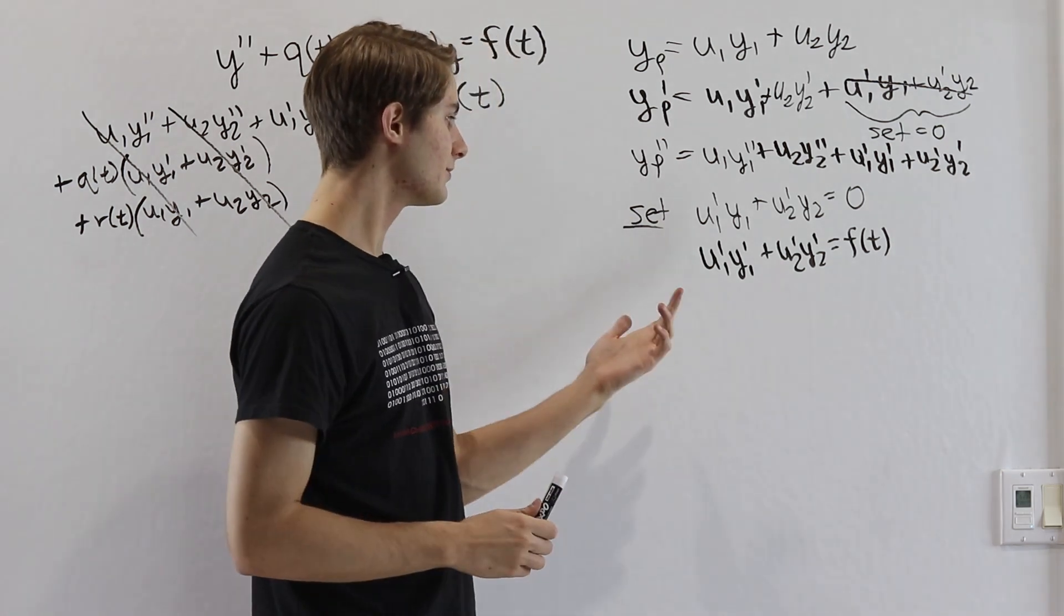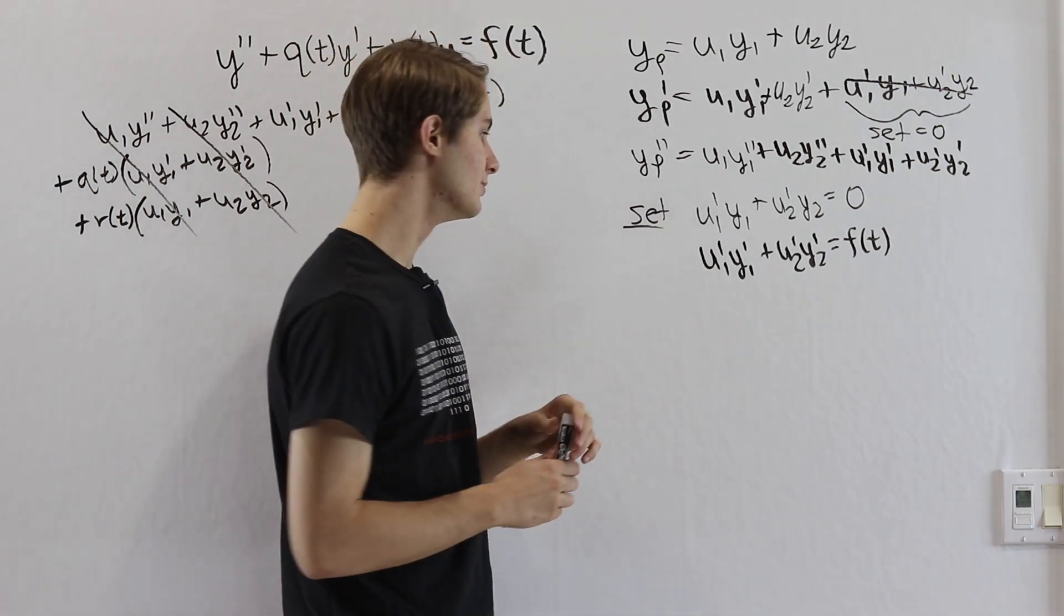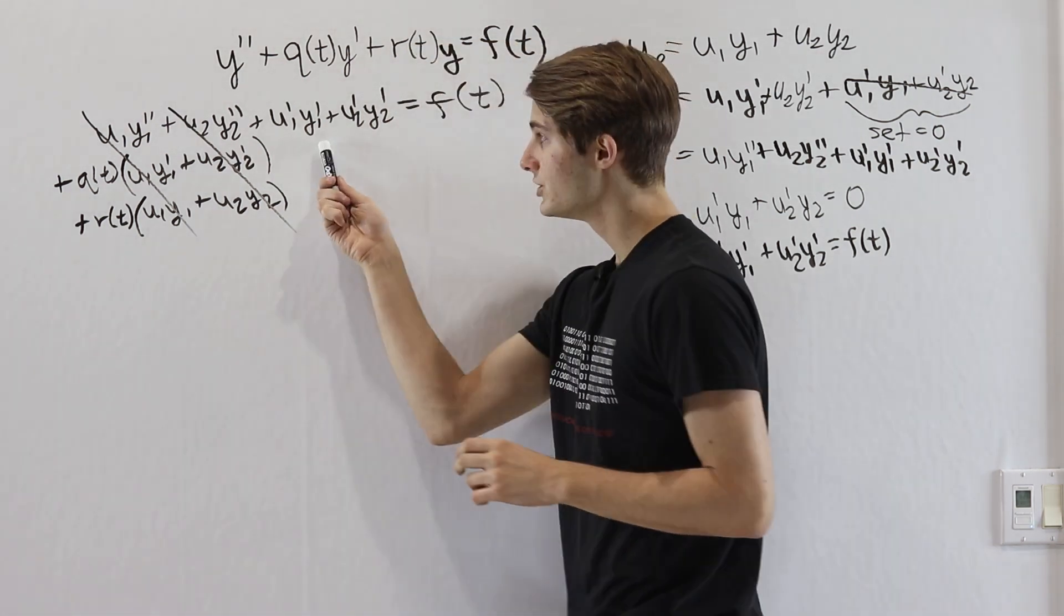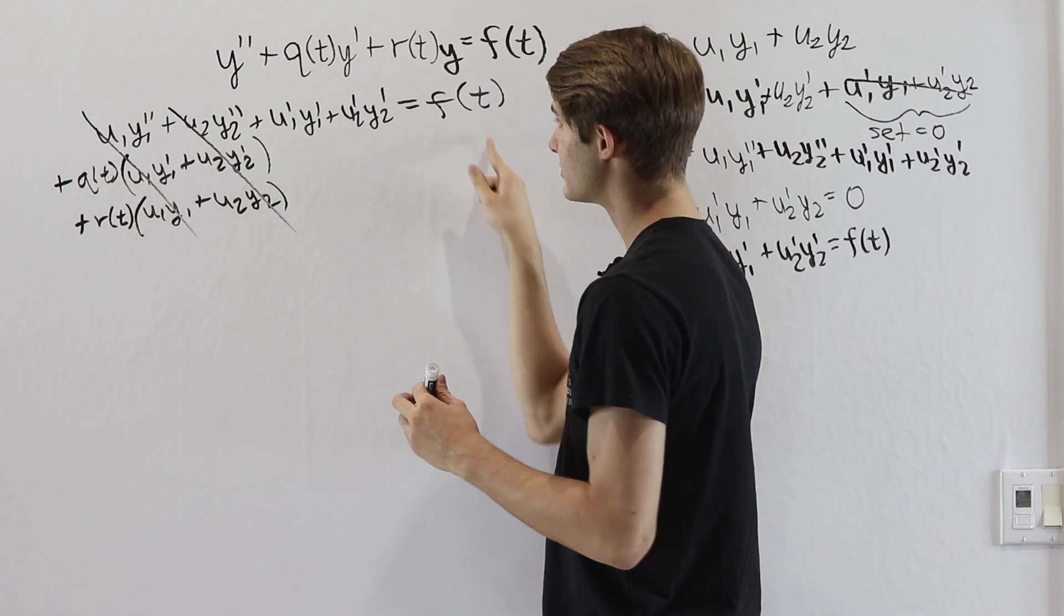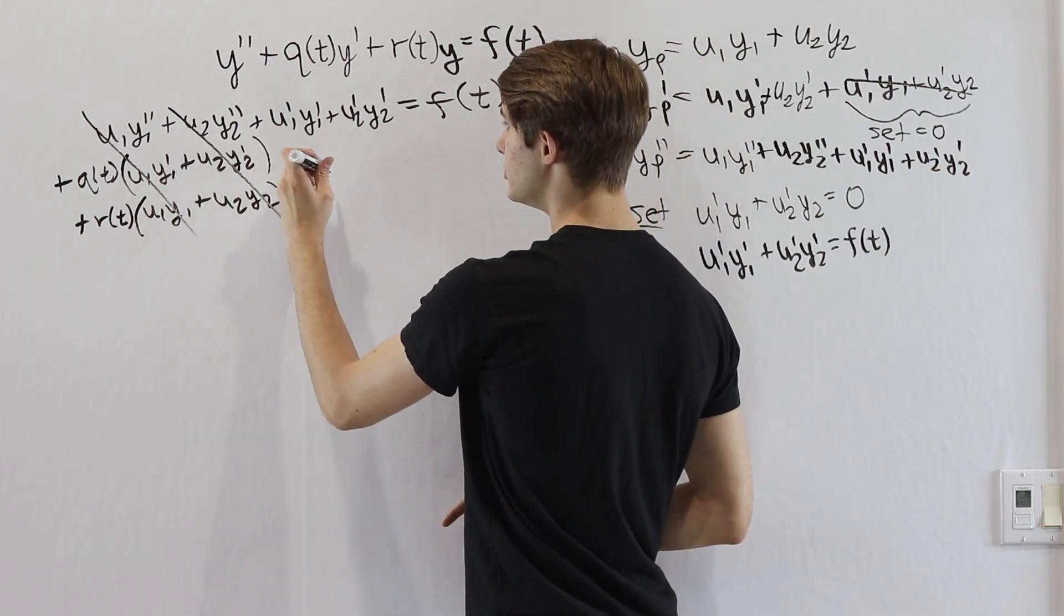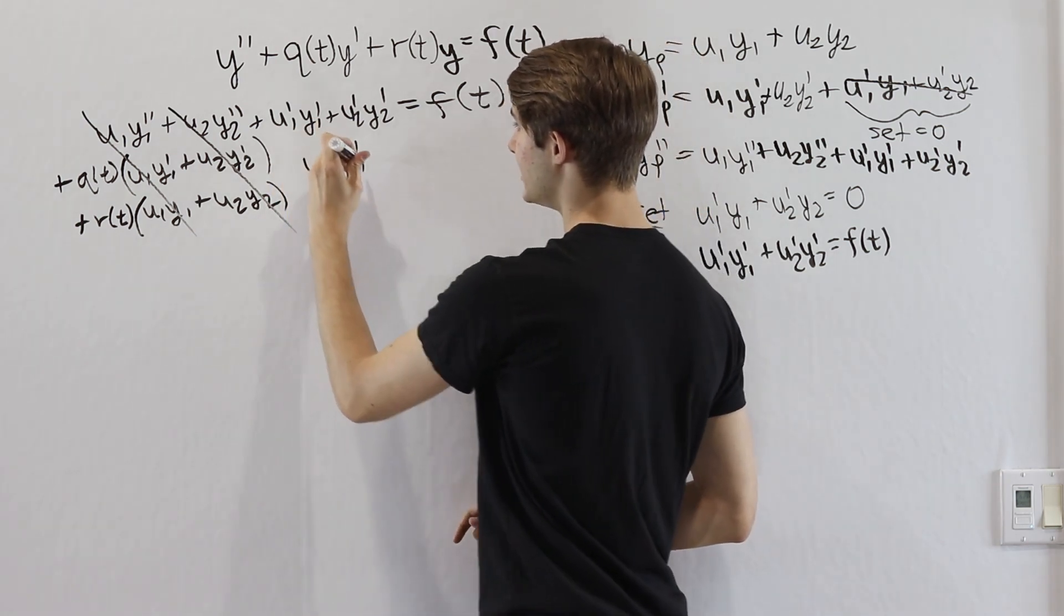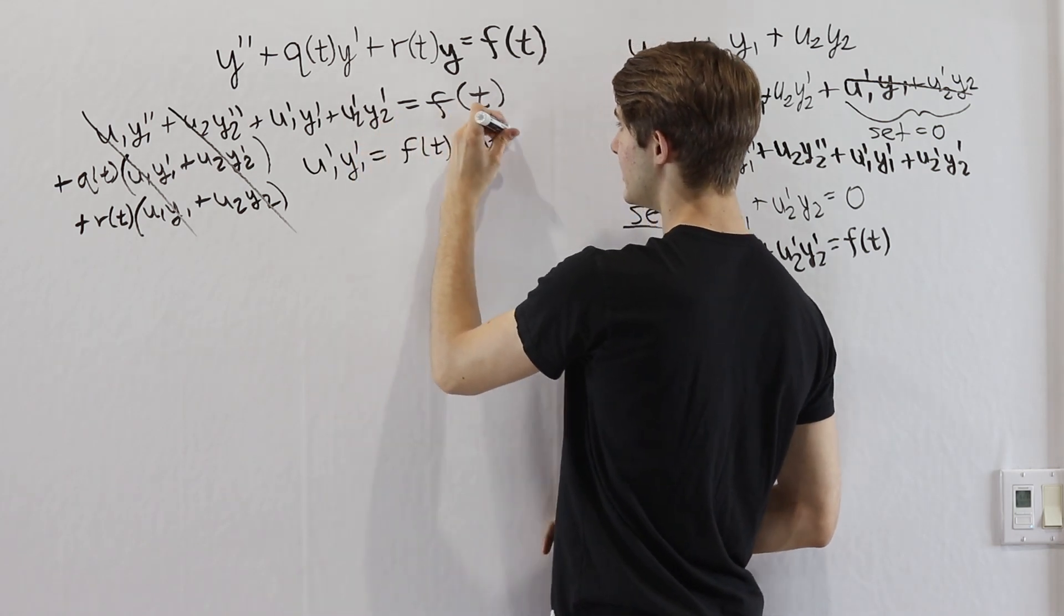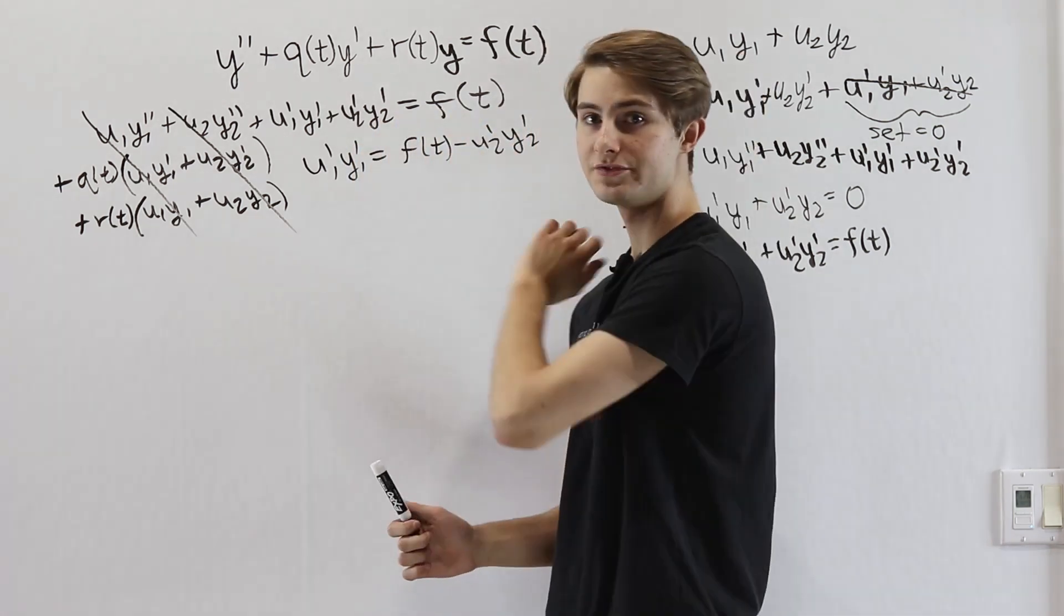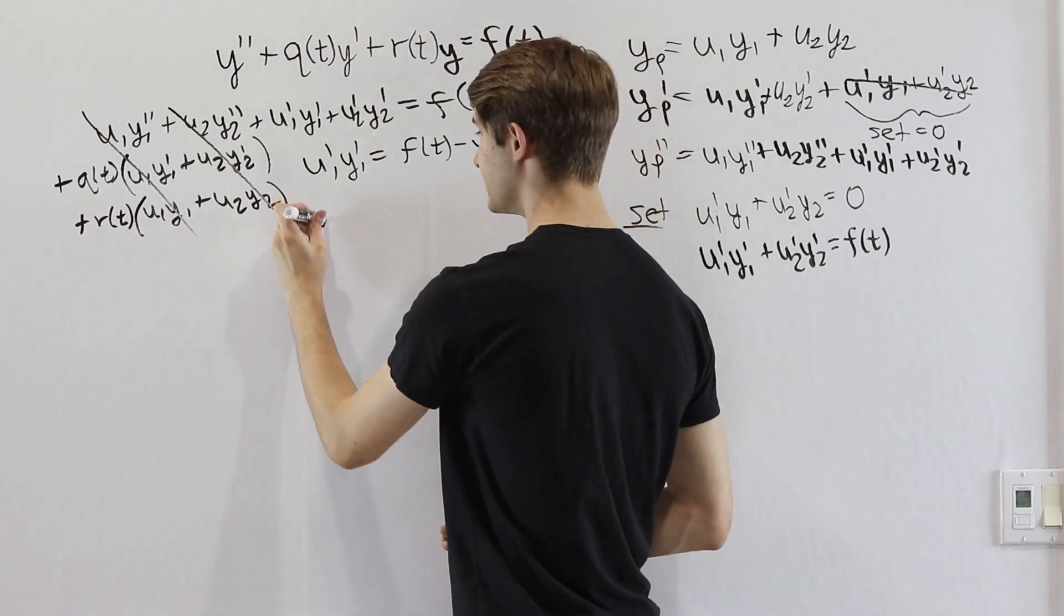To do that, let's start out with solving for our u1. So we'll go back to our equation here and isolate u1 prime. We can start out by subtracting u2 prime y2 prime on both sides. So we get f(t) minus u2 prime y2 prime.